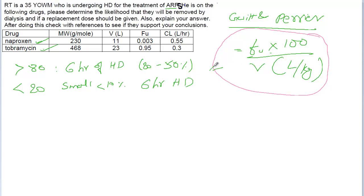Let's apply this equation for our problem over here. The fraction unbound for naproxen is 0.003 times 100.